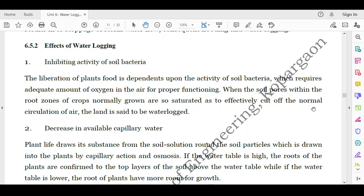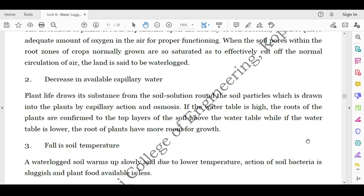Then decrease in available capillary water. Plant life draws its substance from the soil solution around the soil particles which is drawn into the plants by capillary action and osmosis. Though there is ample water present in the root zone, soil moisture and capillary action are the important factors. Due to capillary action, only the roots will extract the water, the moisture and the nutrients. So if the capillary water is not available in the prerequisite amount, then also it will affect the yield of the crop. If the water table is high, the roots of the plants are confirmed to the top layers of the soil above the water table, while if the water table is lower, the root of plants have more room for their growth.